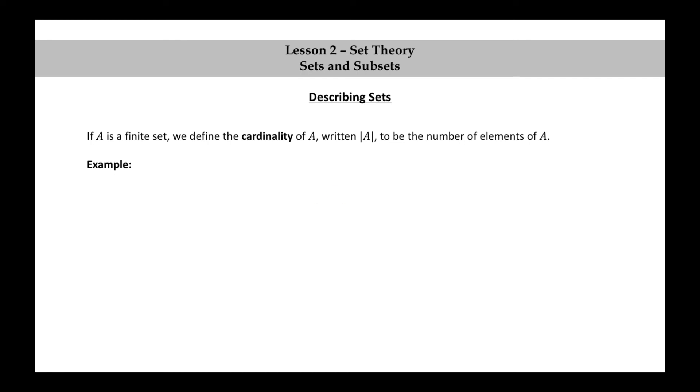Let's look at an example. How about this set? The set consisting of A and B. The cardinality of this set is 2.